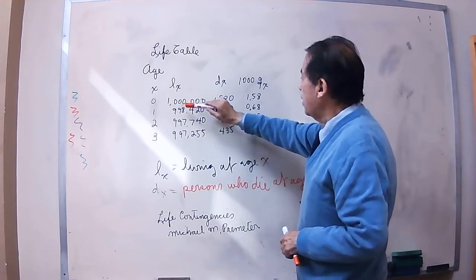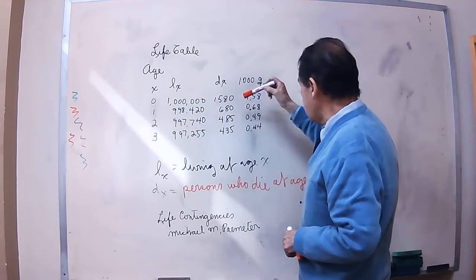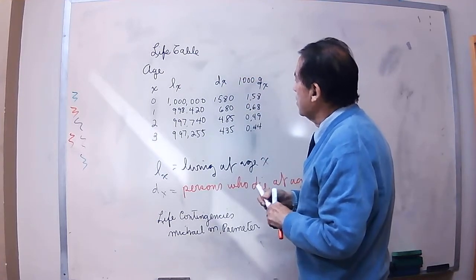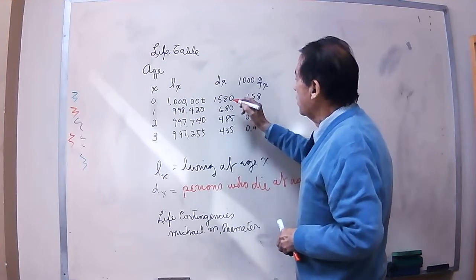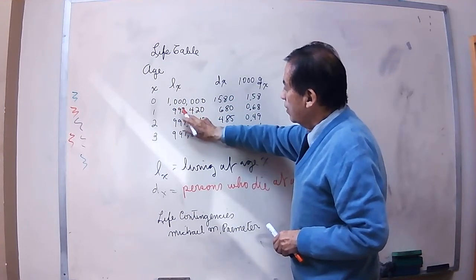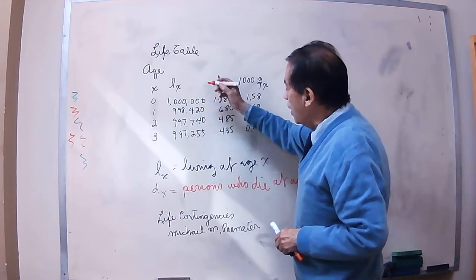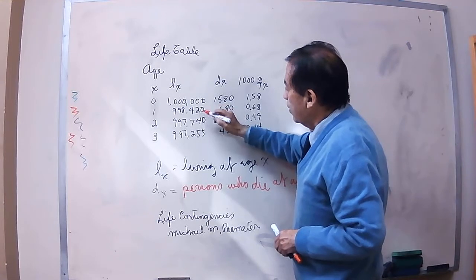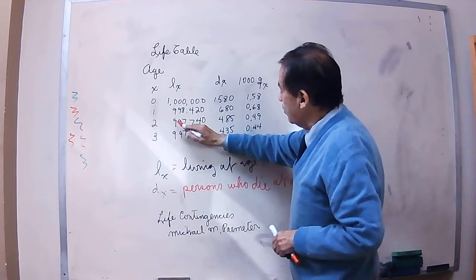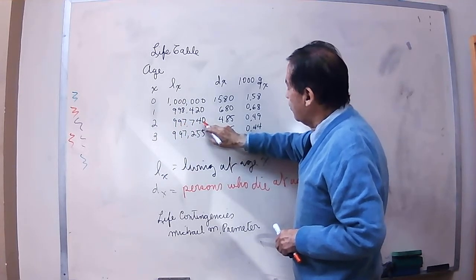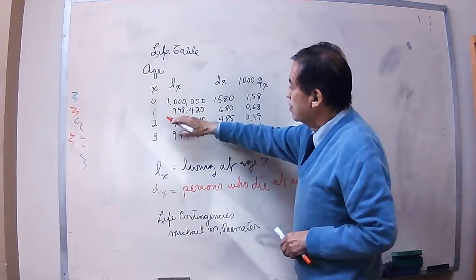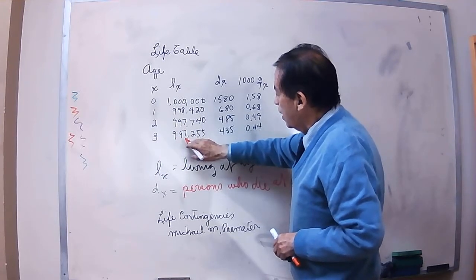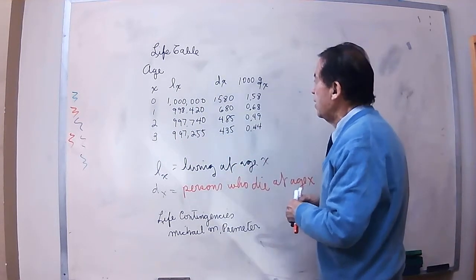We start with a million persons at the beginning, and at age X we see that 1,580 persons die. That means that in the next year we are going to have only 998,420 persons still alive. From this number, 680 persons will die, and then we will have only 997,740 surviving. From this number, if at age 2 another 485 persons die, there will remain 997,255 persons still living at age 3.